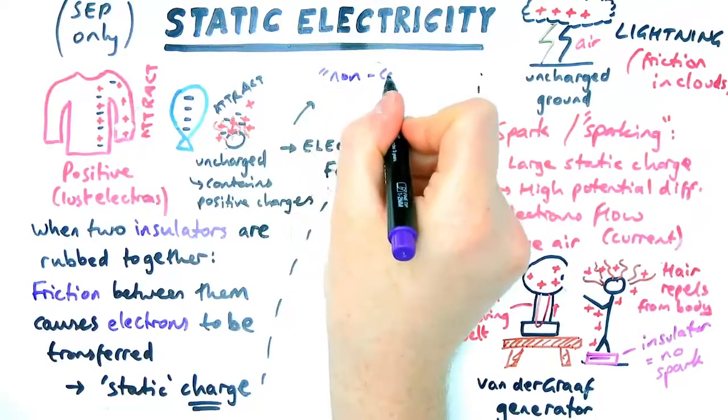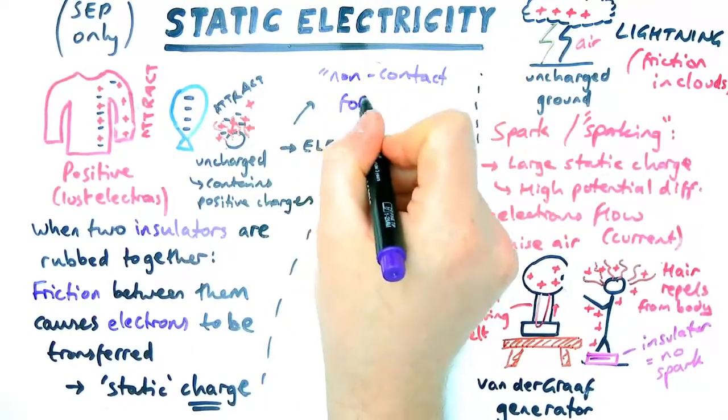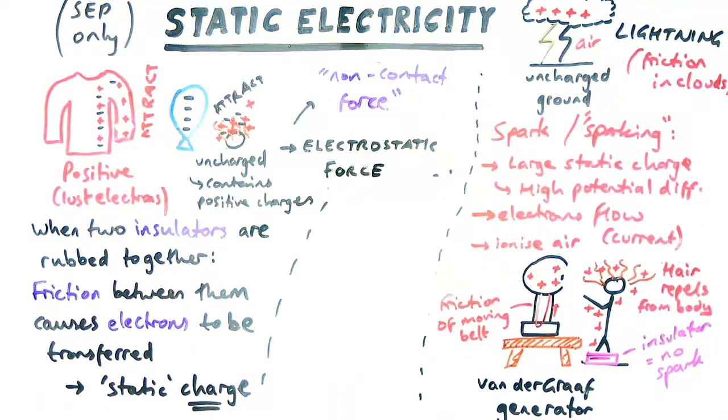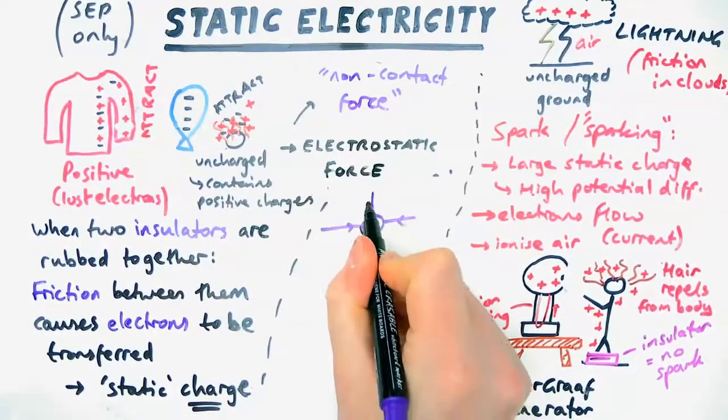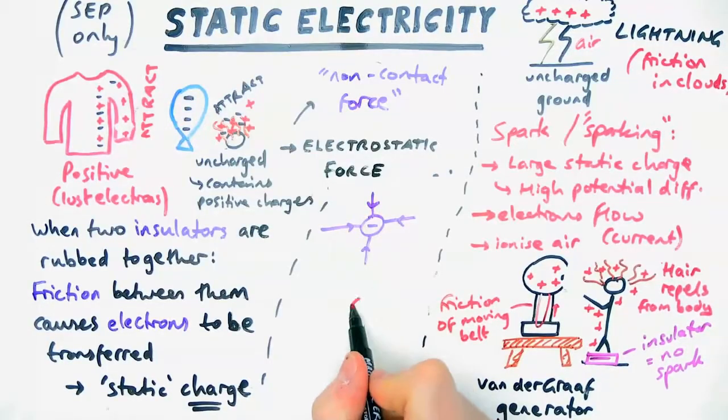Let's look a bit more detail at its electrostatic force. It's an example of a non-contact force, just like gravity, meaning it doesn't need to touch the object to affect it. Now, an electric field, you need to know the shape of, for positive and negative charges, or an electrostatic field, I should say.